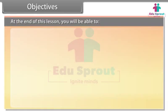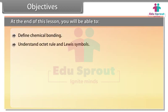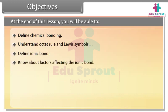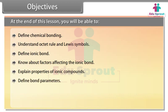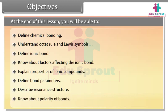At the end of this lesson, you will be able to: define chemical bonding; understand the octet rule and Lewis symbols; define ionic bond; know about the factors affecting the ionic bond; explain properties of ionic compounds; define bond parameters; describe resonance structure; and know about the polarity of bonds.